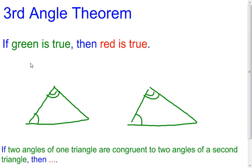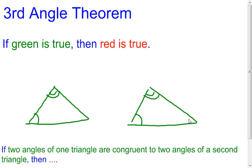Now this next one, the third angle theorem, is sometimes referred to as a corollary of the last theorem. I've reworded it to say if the green is true, then the red is true. We have two triangles and we know two pairs of angles in the different triangles are congruent. So if we know that, we're going to be able to figure out that the remaining angle from the triangle on the left is going to be congruent to the remaining angle on the triangle on the right.